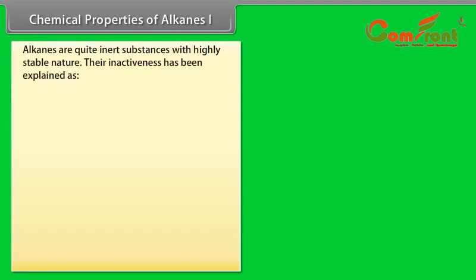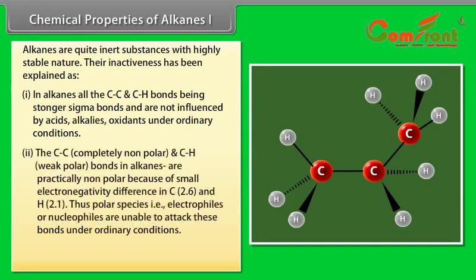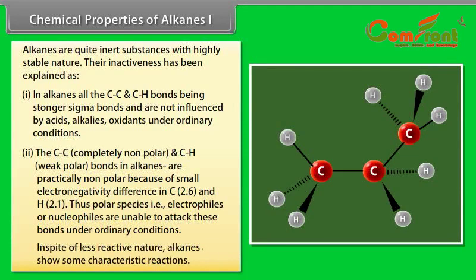Chemical properties of alkanes, part 1: Alkanes are quite inert substances with highly stable nature. Their inactiveness has been explained as: 1. In alkanes, all the carbon-carbon and carbon-hydrogen bonds being stronger sigma bonds are not influenced by acids, alkalis, or oxidants under ordinary conditions. 2. The carbon-carbon completely non-polar and carbon-hydrogen weak polar bonds in alkanes are particularly non-polar because of small electronegativity difference in C (2.6) and H (2.1). Thus, polar species, i.e., electrophiles and nucleophiles, are unable to attack these bonds under ordinary conditions.